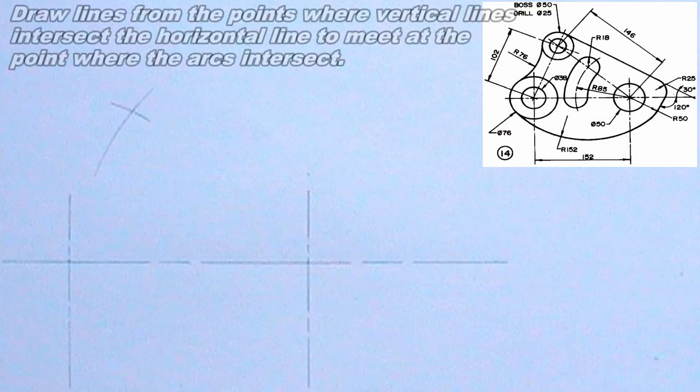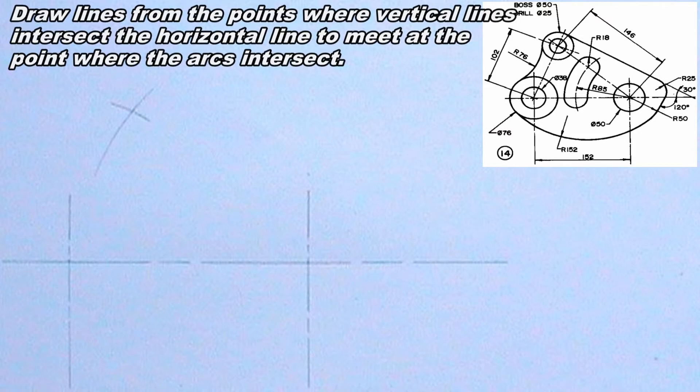I will draw lines from the point where the vertical lines intersect the horizontal line to meet at the point where the arcs intersect.